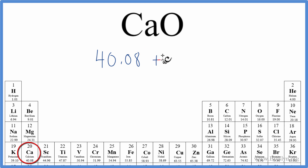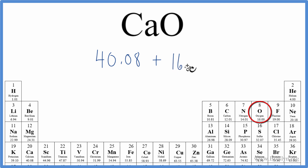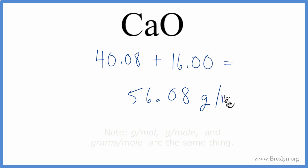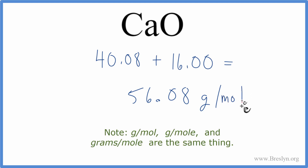We add that with the molar mass for this one oxygen here, which is 16.00 grams per mole, and when you add these up, you get 56.08, and the units are grams per mole. Very important to add the units there. And that's the molar mass for CaO, calcium oxide.